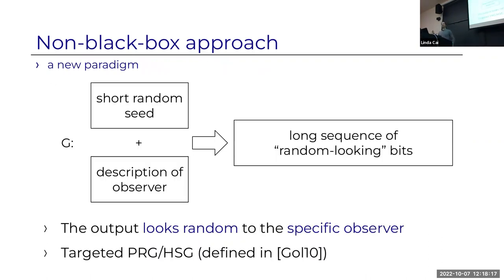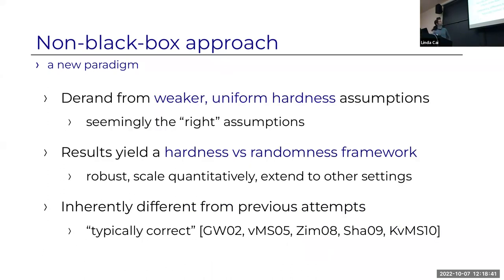Going back to the previous picture of a PRG: earlier, the PRG took a short random seed and stretched it. Now we have what we call a targeted PRG—it takes a short random seed and a description of an observer, and produces a long sequence of pseudorandom bits that are pseudorandom only to that specific observer. This object was defined about 12 years ago by Goldreich. We're going to get derandomization from inherently weaker assumptions that avoid circuit lower bounds and only require lower bounds for Turing machines—for uniform algorithms.